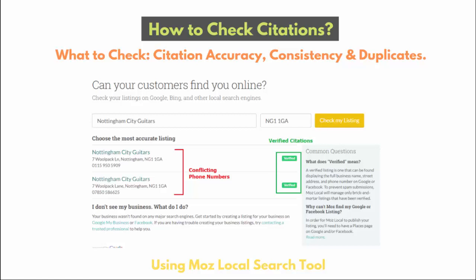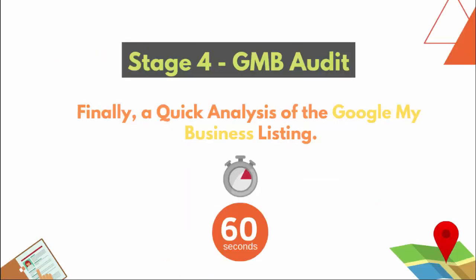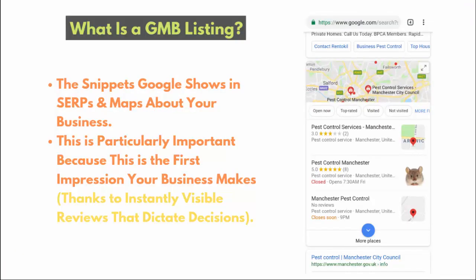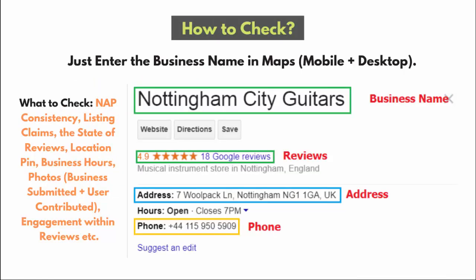Part four — GMB audit. Google My Business is a massive part of local rankings. The snippets within Google My Business are one of the most important things. When you search on mobile, the local pack — also called the snack pack — appears first. This is the first impression your business makes. Make sure you have an image, your specific brand name, and that your reviews are strong, since those are instantly visible in this view.